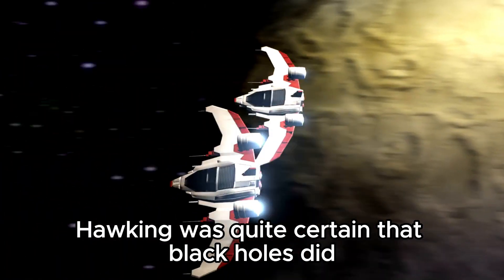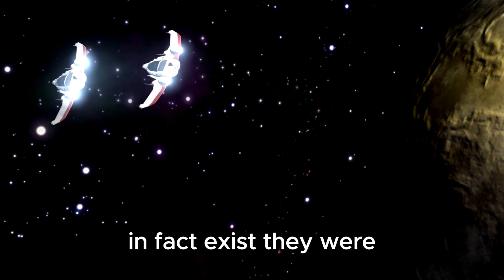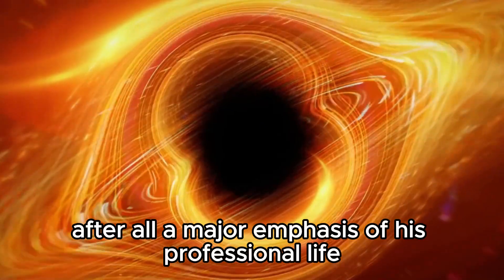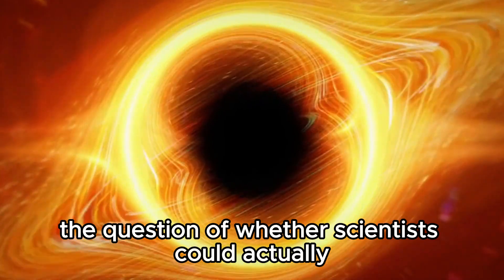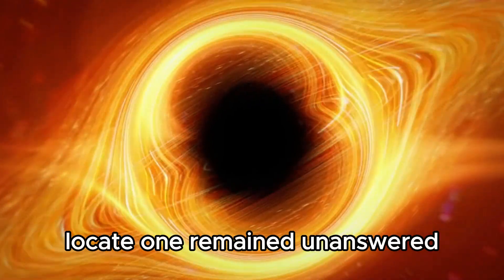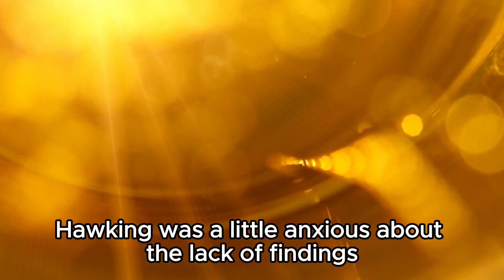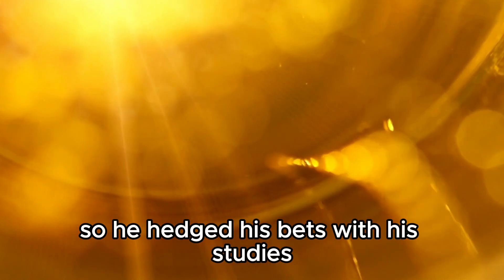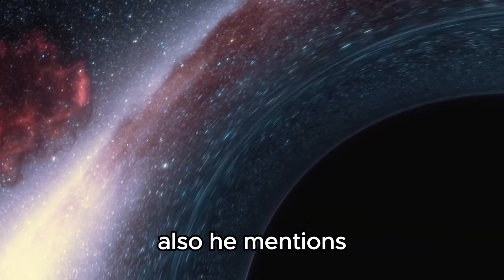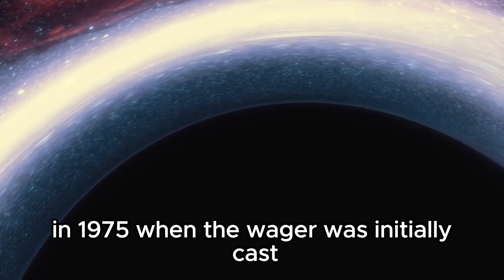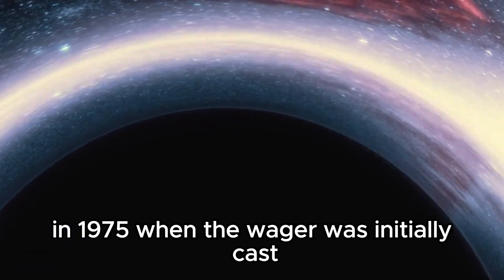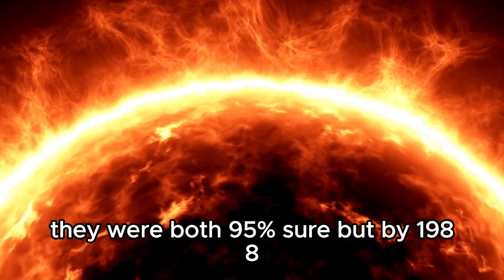Hawking was quite certain that black holes did in fact exist—they were, after all, a major emphasis of his professional life. However, the question of whether scientists could actually locate one remained unanswered. Naturally, Hawking was a little anxious about the lack of findings, so he hedged his bets with his studies. He mentions that he and Thorne were almost positive Cygnus X-1 was a black hole in 1975 when the wager was initially cast. They were both 95% sure.